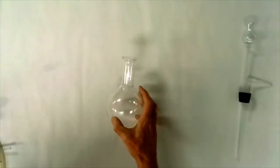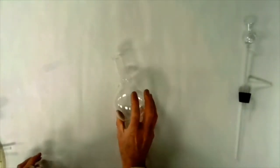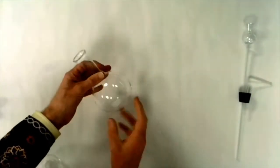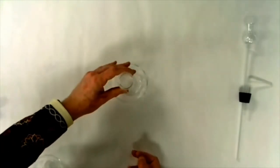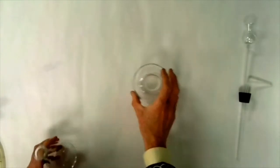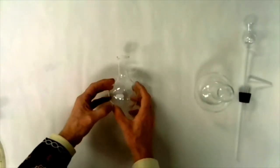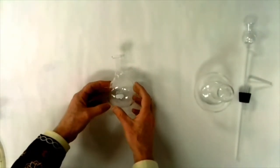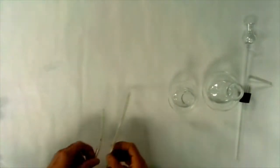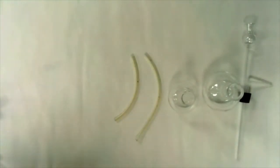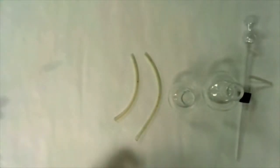We need a 500-milliliter Florence flask. A Florence flask is a round flask that's flat on the bottom so it can stand upright. A 250-milliliter Florence flask. Some pieces of tubing. This is kind of gross tubing, not very clean, but it'll work.